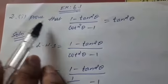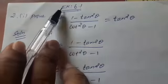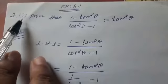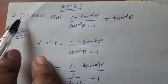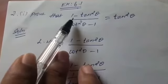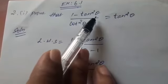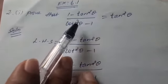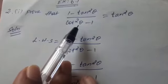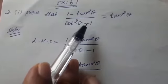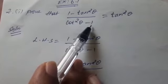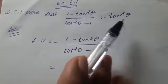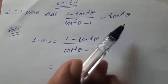Next sum — exercise 6.1, second sum. Prove that (1 minus tan squared theta) divided by (cot squared theta minus 1) is equal to tan squared theta.